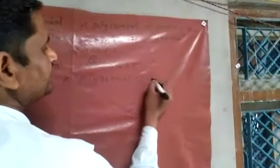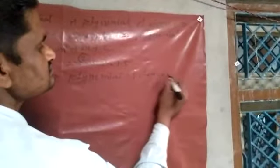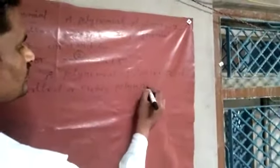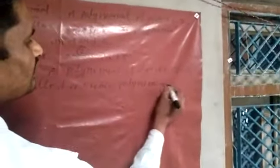Cubic Polynomial: a polynomial of degree 3 is called a cubic polynomial. General form: ax cubed plus bx squared plus cx plus d — here the highest power is 3, so this is called a cubic polynomial.